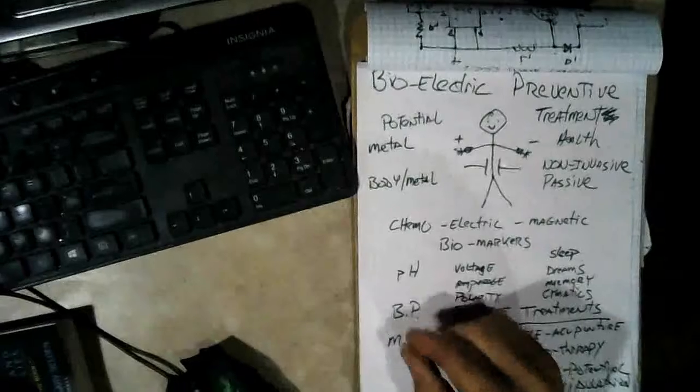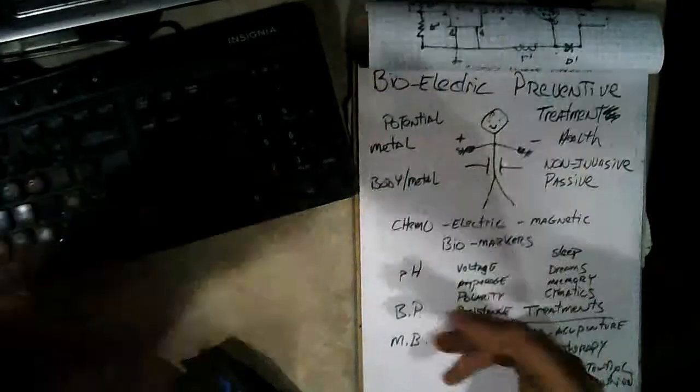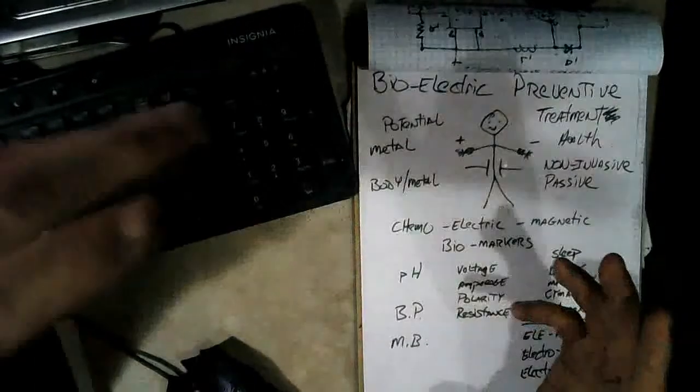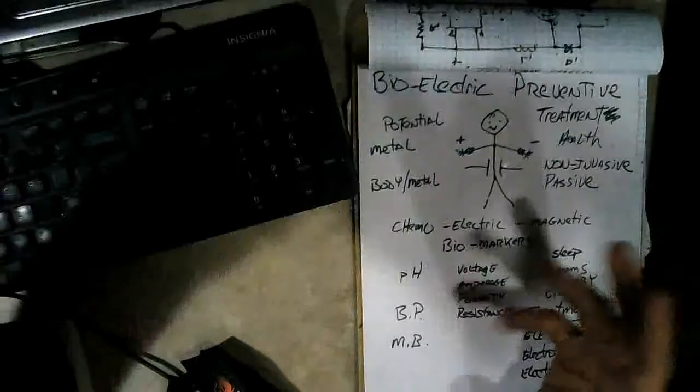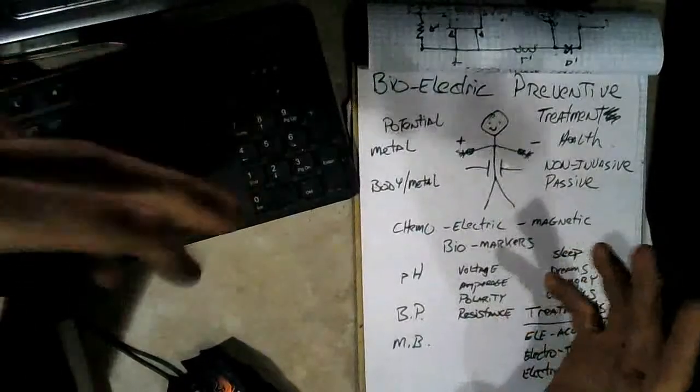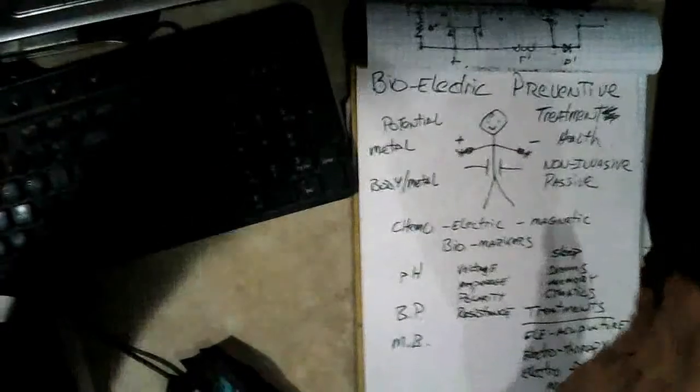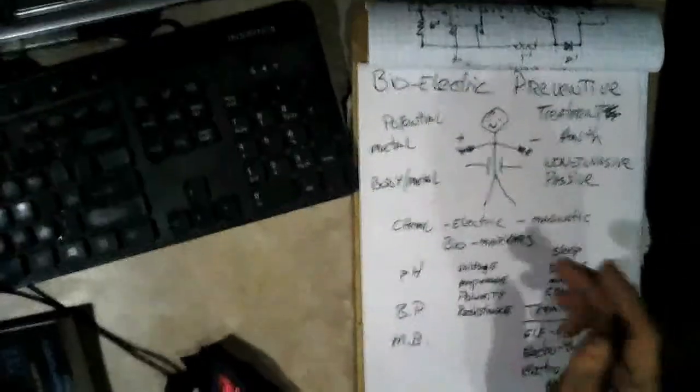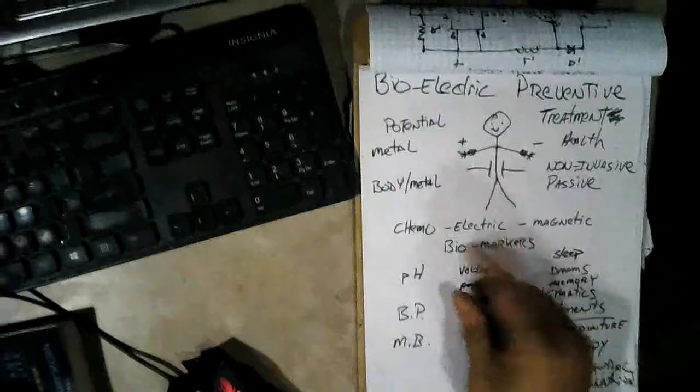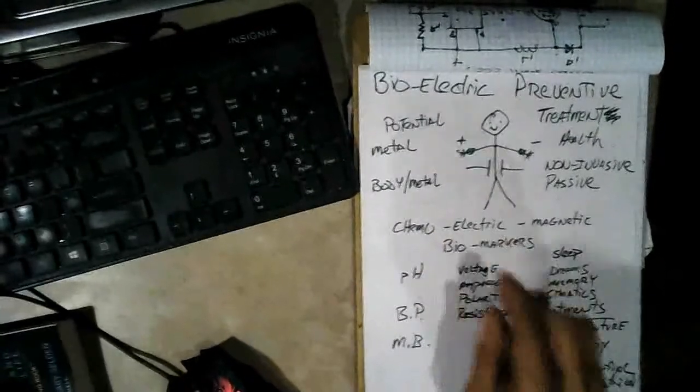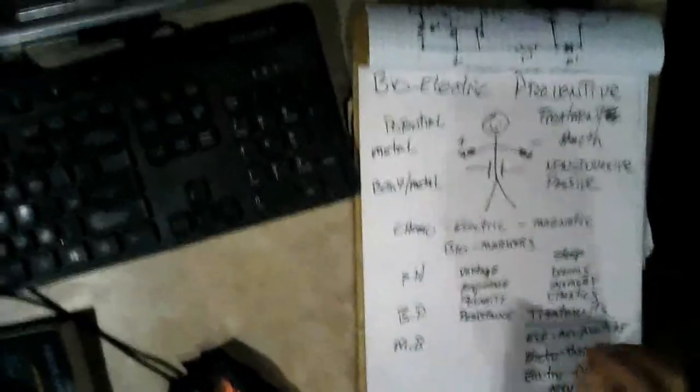You can use blood pressure and mineral balances and things like that, but those are indirect measurements of the chemical potential. Chemical reactions are pH-specific, usually. But when you come to electricity, which you can combine with the chemo and the magnetic, you have a whole lot of biomarkers here.